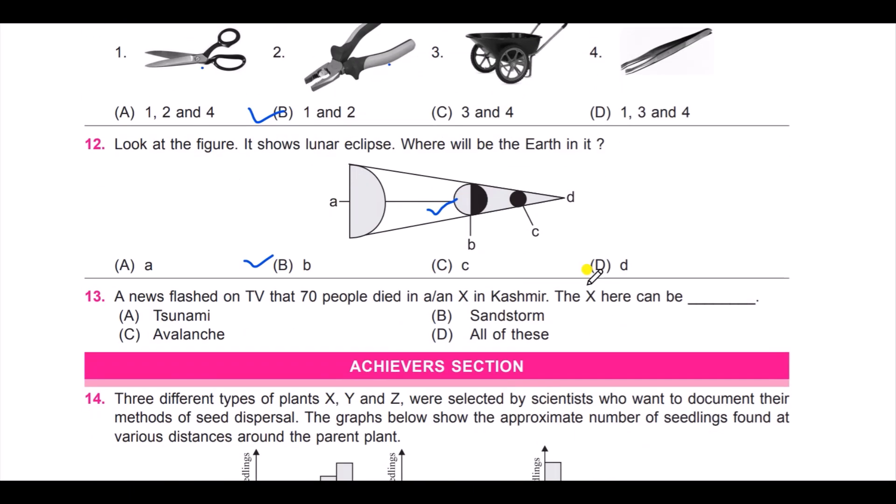Question number 13: a news flashed on TV that 70 people died in X in Kashmir. The X here can be: option A, tsunami; B, sandstorm; C, avalanche; D, all of this. So you need to think about the Kashmir weather here. It will be avalanche: C.